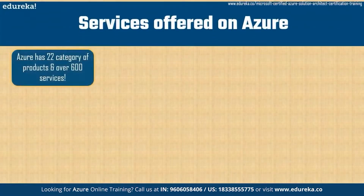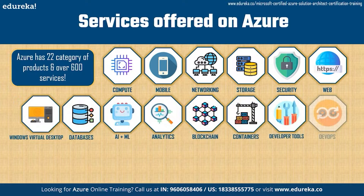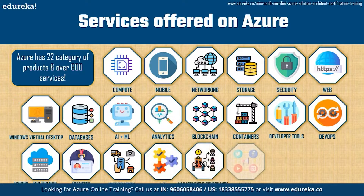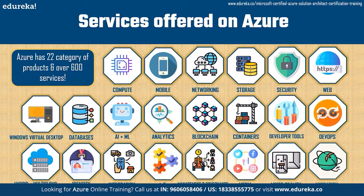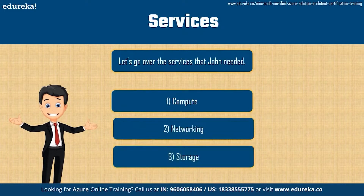Azure has 22 categories of products and over 600 services, so we won't cover all of them here — check Azure's website for the full list. John specifically needed three services: compute, networking, and storage. Let's take a look at each of these in a bit of detail.